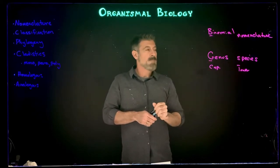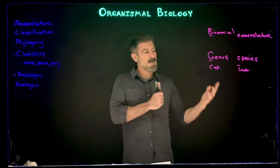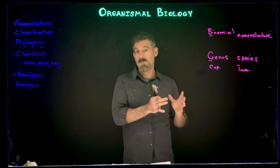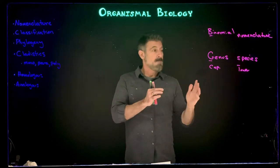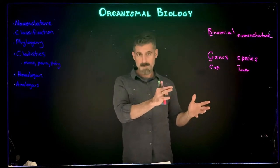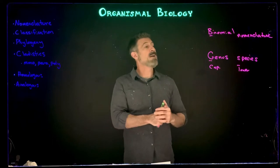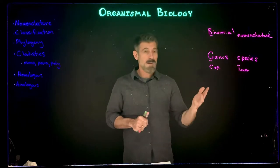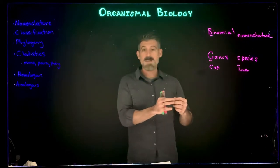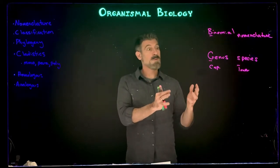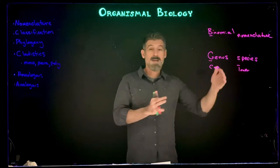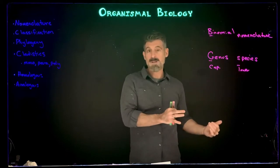Binomial nomenclature was developed by Linnaeus, who started naming organisms and putting them into groups based on relationships. He didn't really think about evolutionary relationships — he was more looking at how he could categorize them as an organizer. What turns out is that because of the way organisms were named and organized, we often start to see relationships between groups that share the same genus, because they look a lot alike but have certain differences that put them into different species.